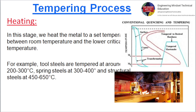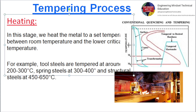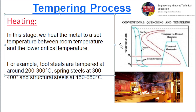In the heating stage, we heat the metal to a set temperature between room temperature and the lower critical temperature. For example, tool steels are tempered at around 200 to 300 degrees Celsius, spring steels at 300 to 400 degrees Celsius, and structural steels at 450 to 650 degrees Celsius.